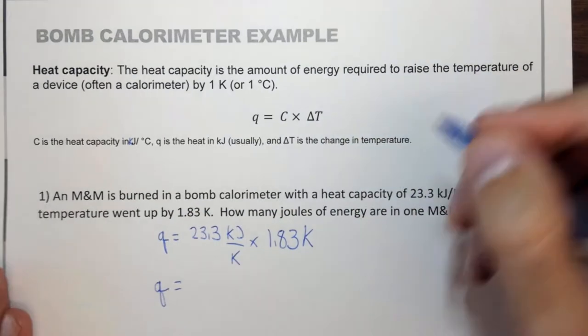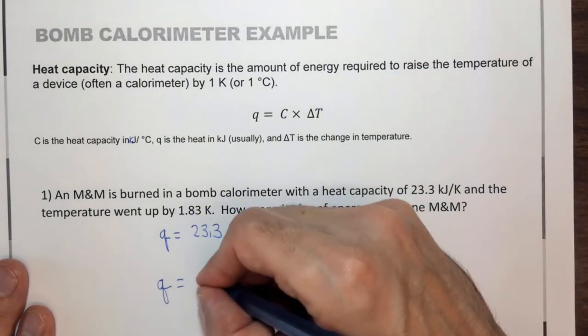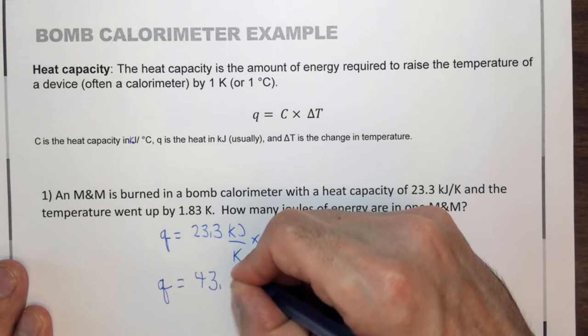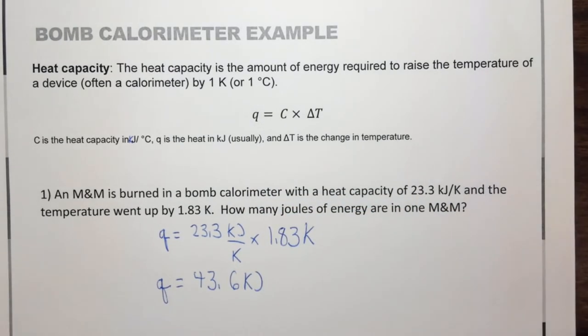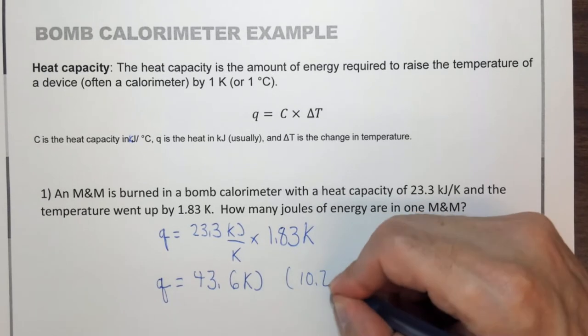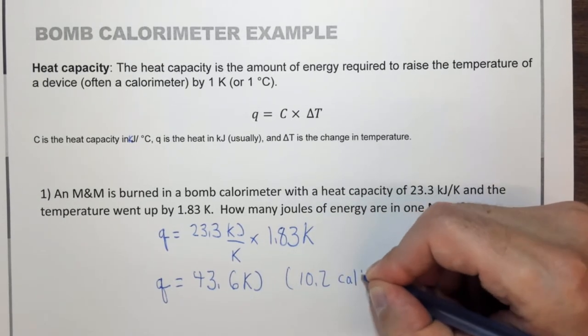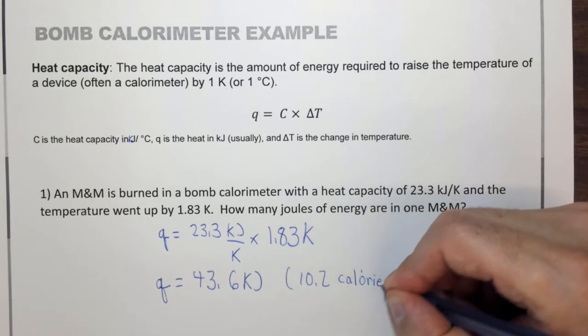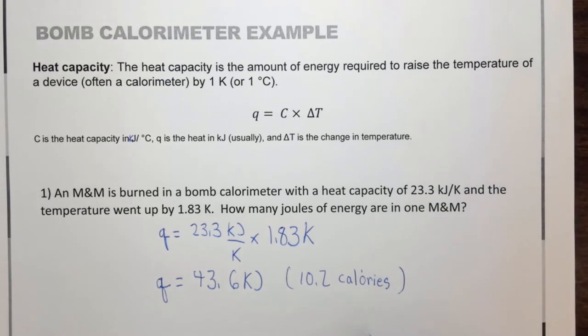Q equals 43.6 kilojoules. Note that this is about 10.2 calories. And this is kilocalories, but it's about 10.2 calories or 4.18 times less than it is kilojoules. So there's about 10 calories in an M&M. And this is how we could actually figure that out.